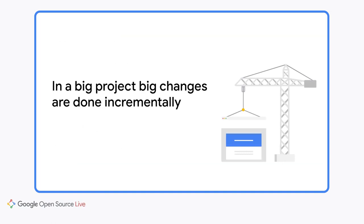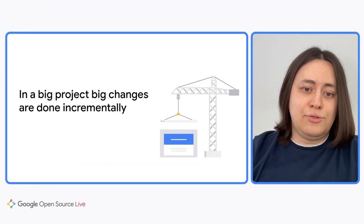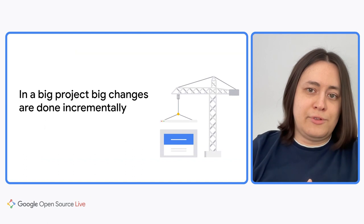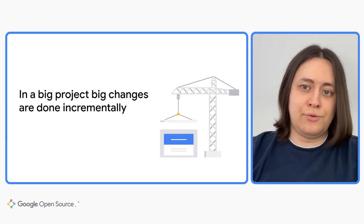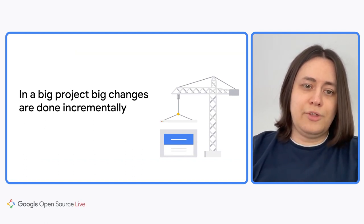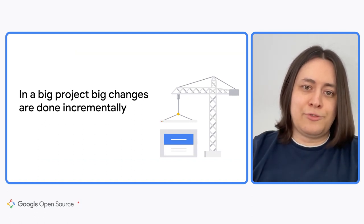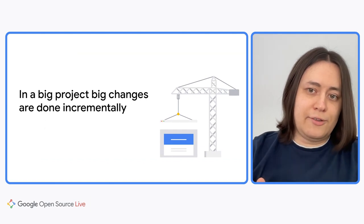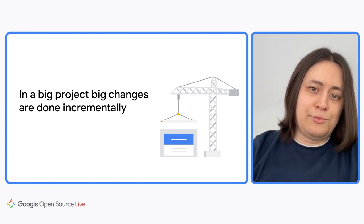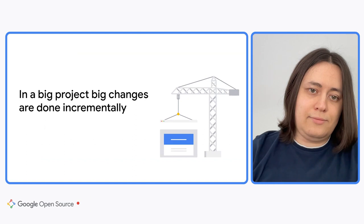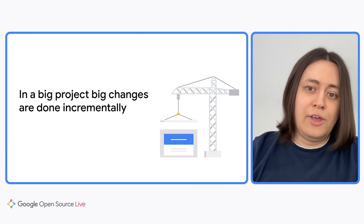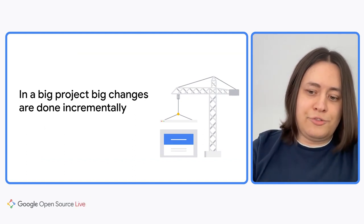Is it still a good idea to rewrite it in Rust? In a big project, big changes are done incrementally, one step at a time. If your project is essential for your company's business, you cannot just ask everyone to freeze feature development while you convert a few million lines of code to Rust. You generally should not do a big bang rewrite in Rust unless you have already decided to start from scratch for other reasons. Most likely, a rewrite is not economically and socially viable. So a big project can adopt a new language only through gradual, incremental changes.